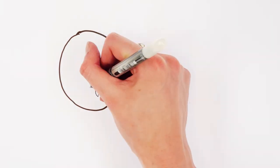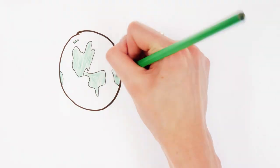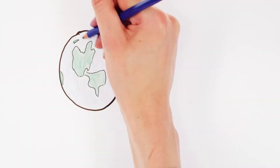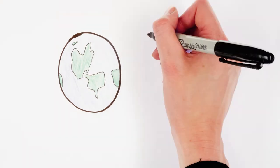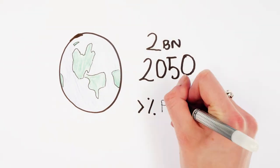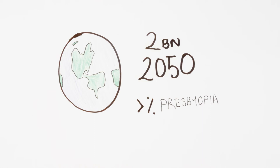The population of the world is aging and the number of older people is projected to reach nearly 2 billion by 2050. As a consequence, a bigger percentage of the population will have presbyopia.